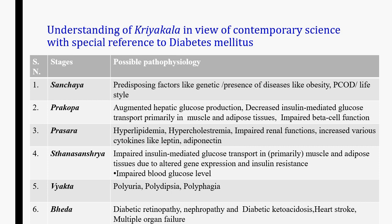In diabetes mellitus, hyperlipidemia, hypercholesterolemia, impaired renal functions, and increased various cytokines like Leptin and Adiponectin indicate that disease has reached the Prasar stage. Impaired insulin-mediated glucose transport, insulin resistance, and impaired blood glucose level may be considered under Sthan Sanchray stage. Polyuria, polydipsia and polyphagia are the three important features of the Vyakti stage.